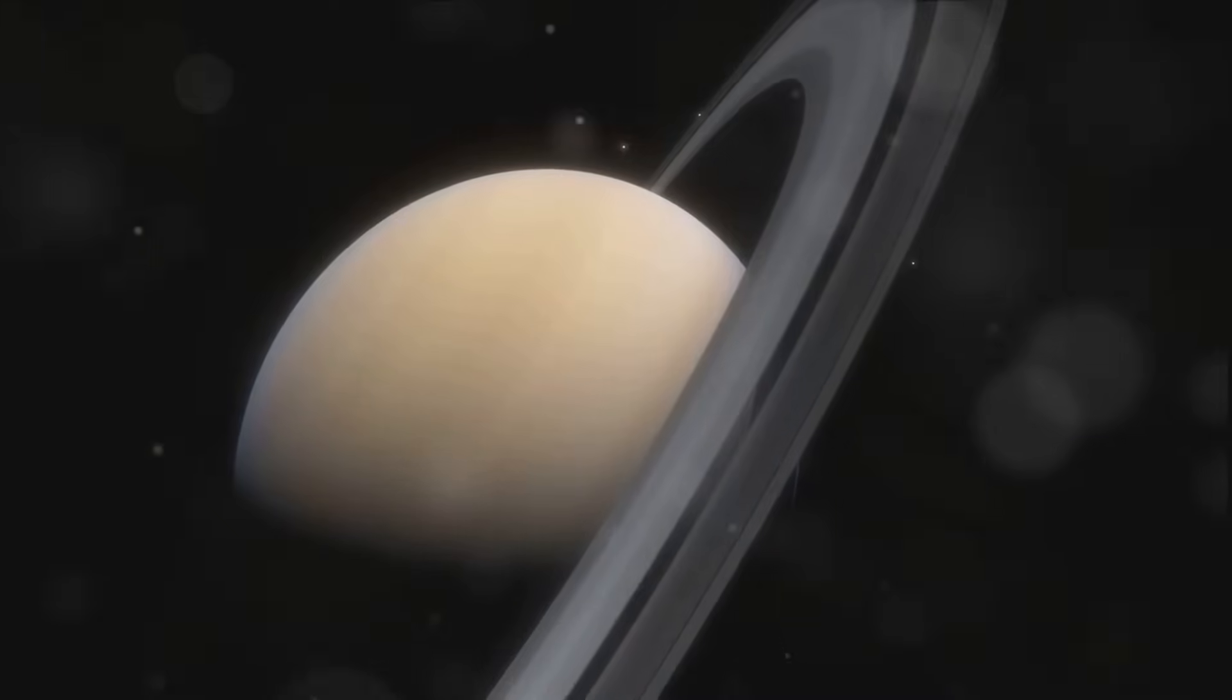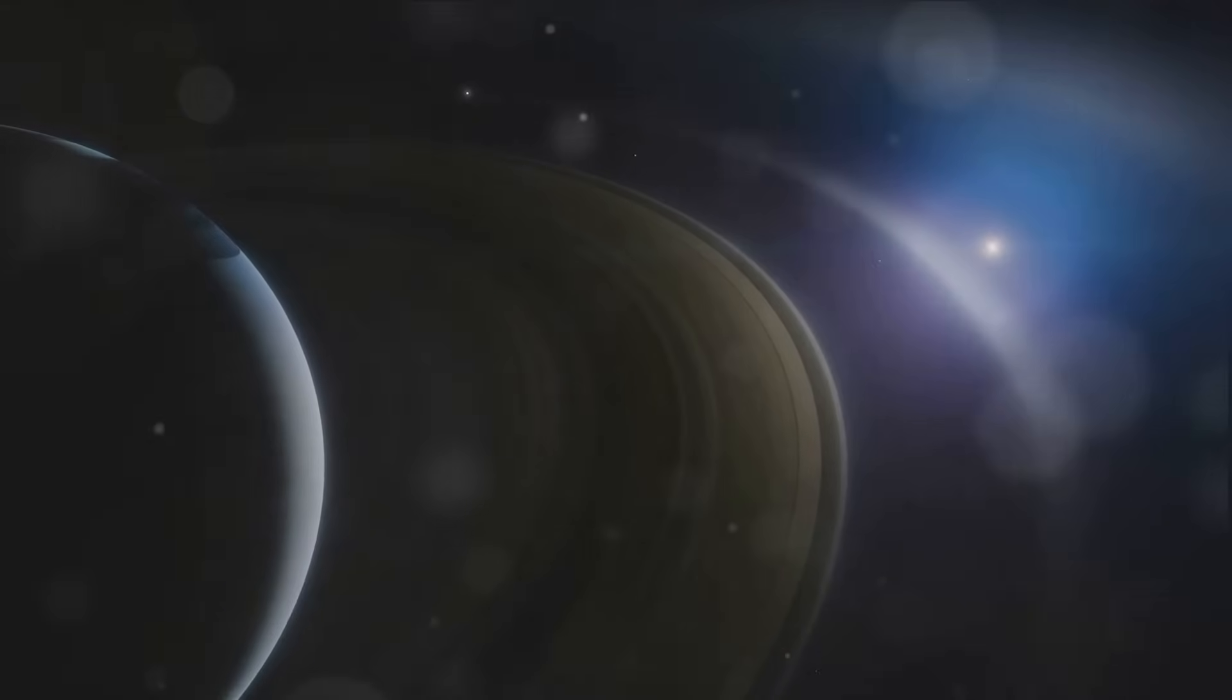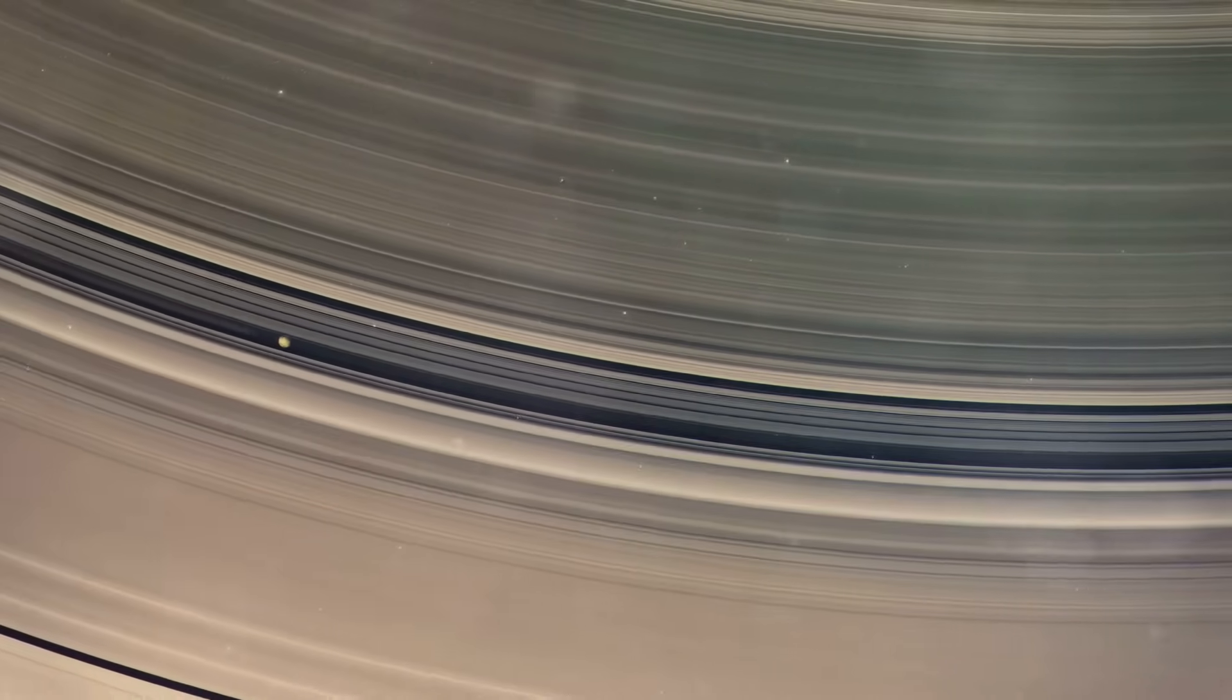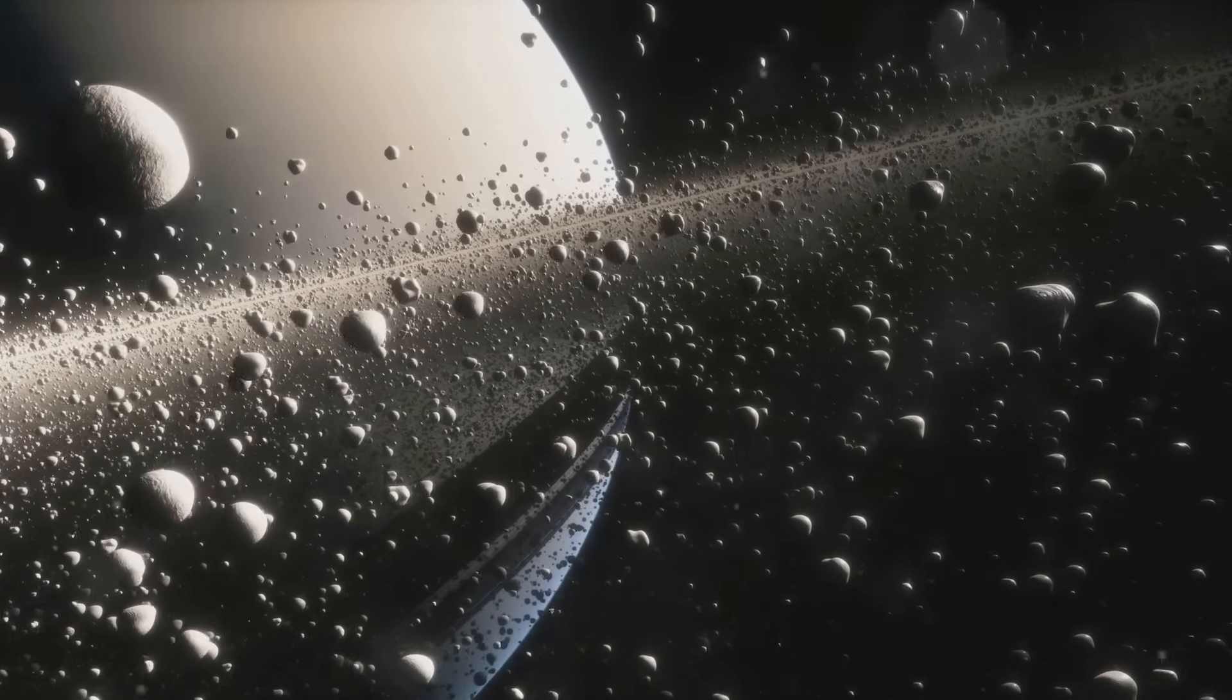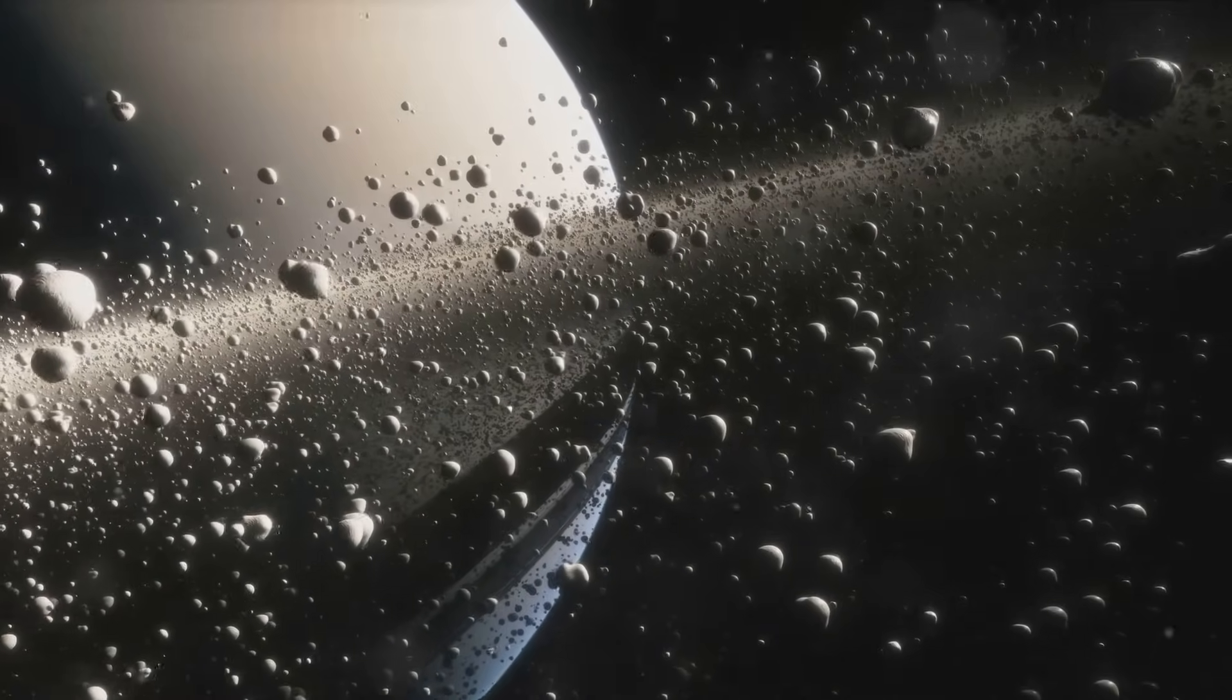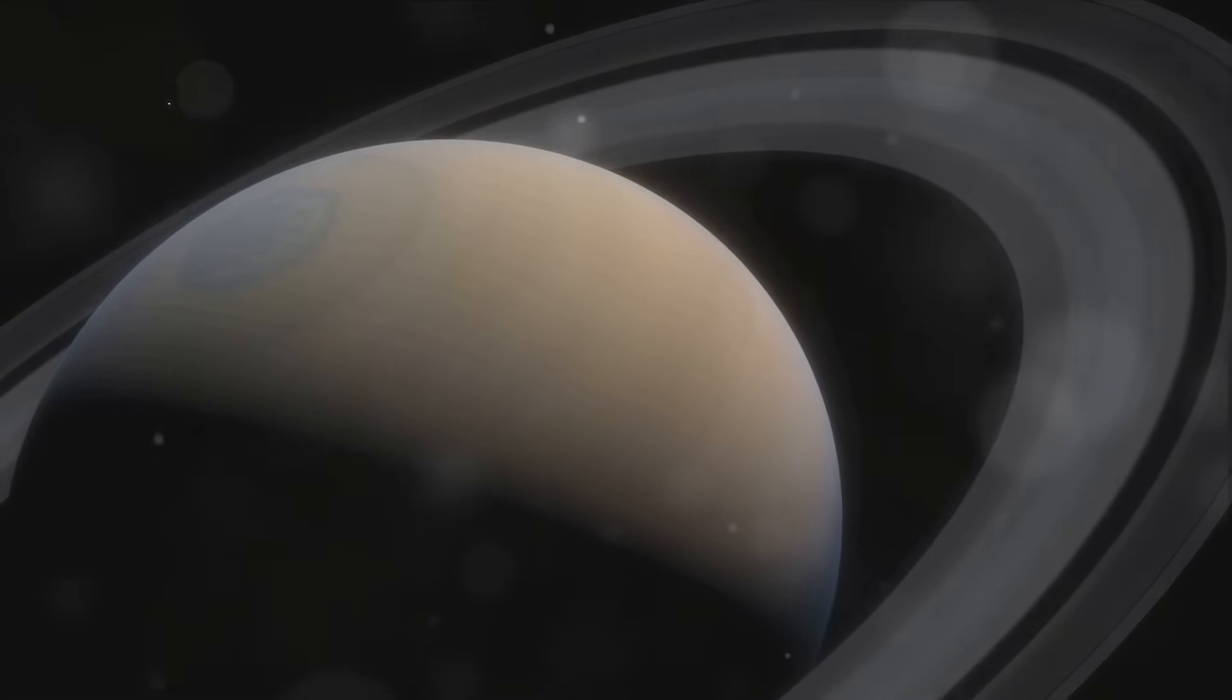But what really makes Saturn a sight to behold are its breathtaking rings. These rings span up to 280,000 kilometers but are only about one kilometer thick. They're composed of countless chunks of ice and rock, ranging from tiny grains to massive boulders. These particles orbit Saturn, creating a dazzling display that can be seen from Earth with the help of a telescope.